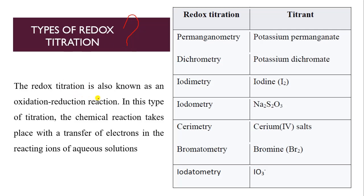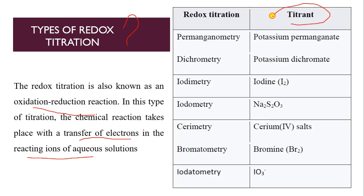Redox titration is basically an oxidation-reduction reaction. In this type of titration, there will be an exchange — or we can say the transfer — of electrons in the reacting ions of a solution. This is a redox titration. Now we will see what are the types of redox titration and which titrant is used for which method.